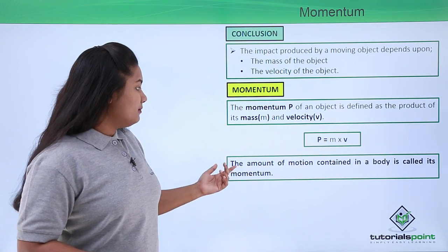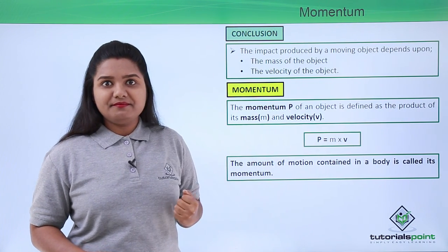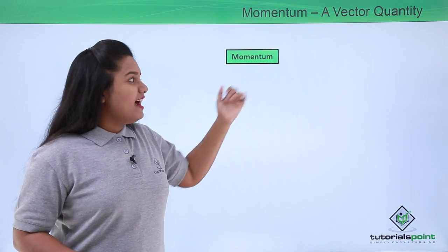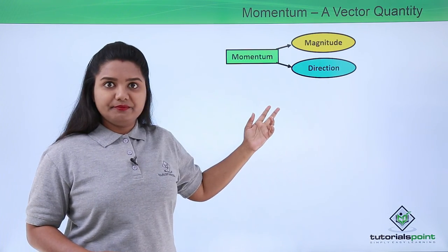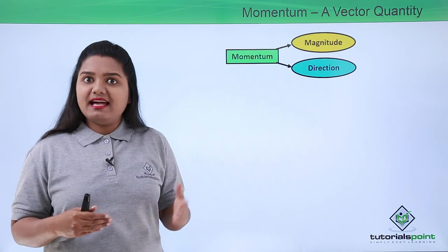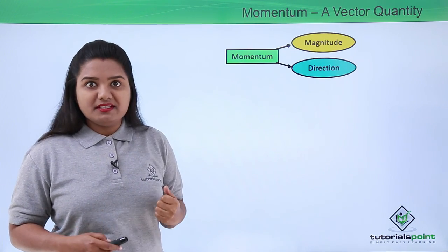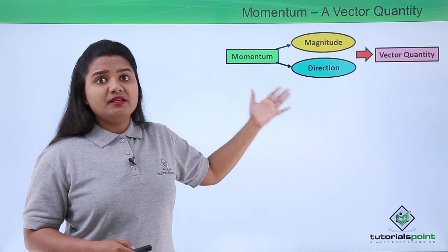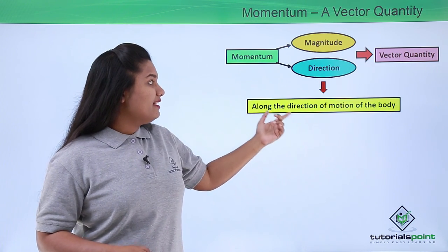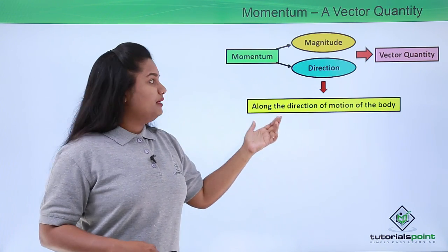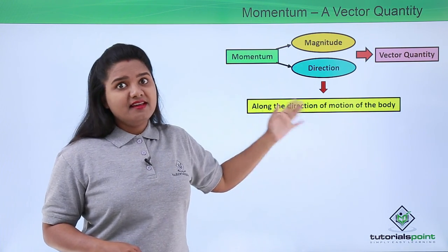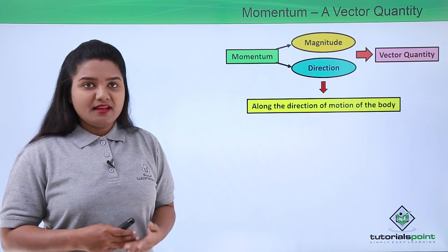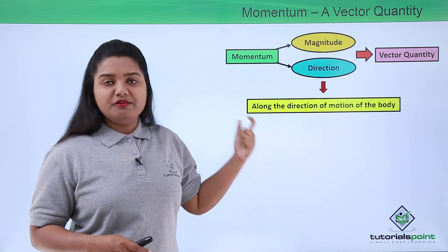We can also define momentum as the amount of motion contained in a body. Momentum is a physical quantity that has both magnitude and direction, so it is a vector quantity. The direction of momentum is exactly along the direction of motion of the body — that is, along the direction in which the velocity of the body acts.